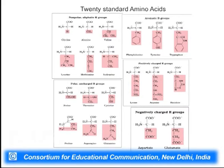Another property to remind ourselves: the 20 standard amino acids are grouped into five groups based on being polar, nonpolar, uncharged, positively charged, or negatively charged. A quick reminder of those amino acids is important because these properties will be relevant when we talk about the interactions in protein structure.